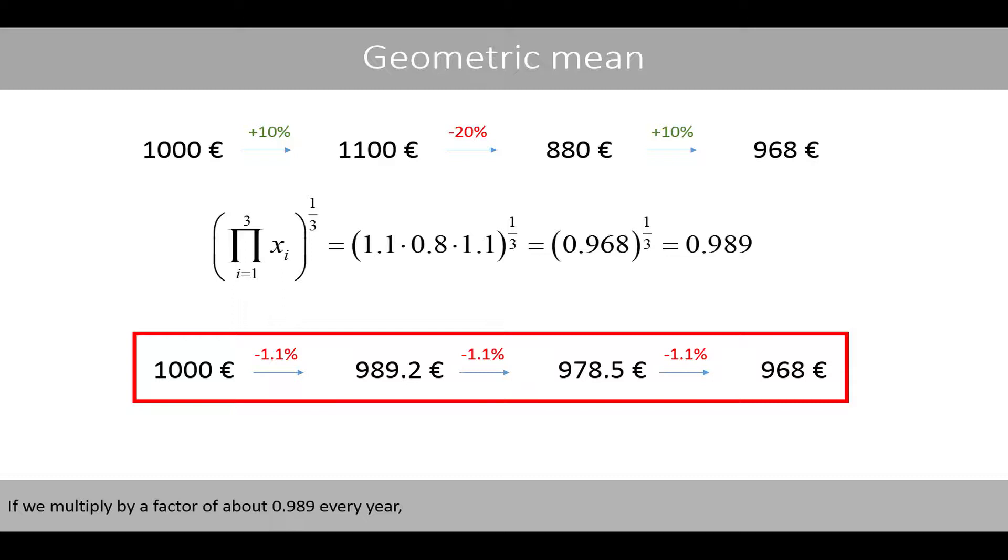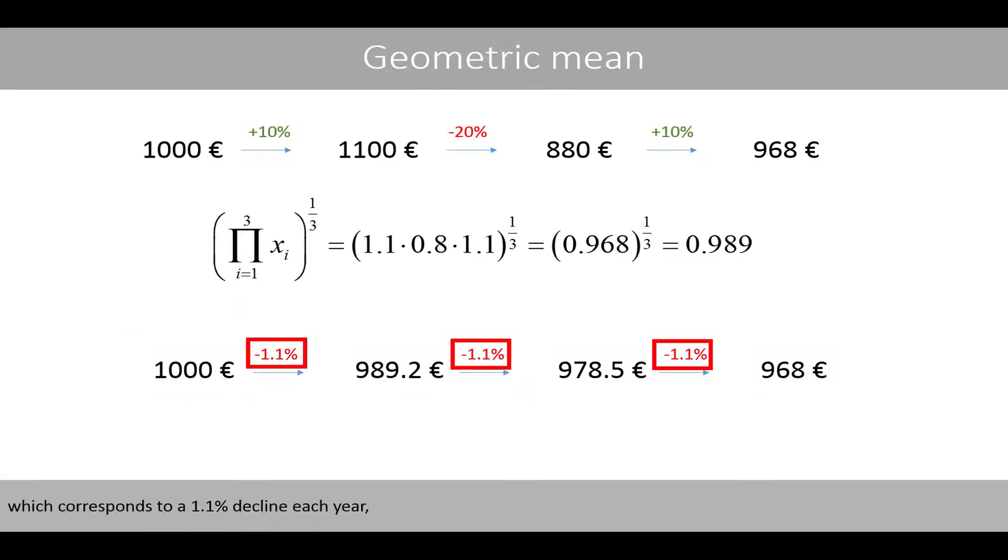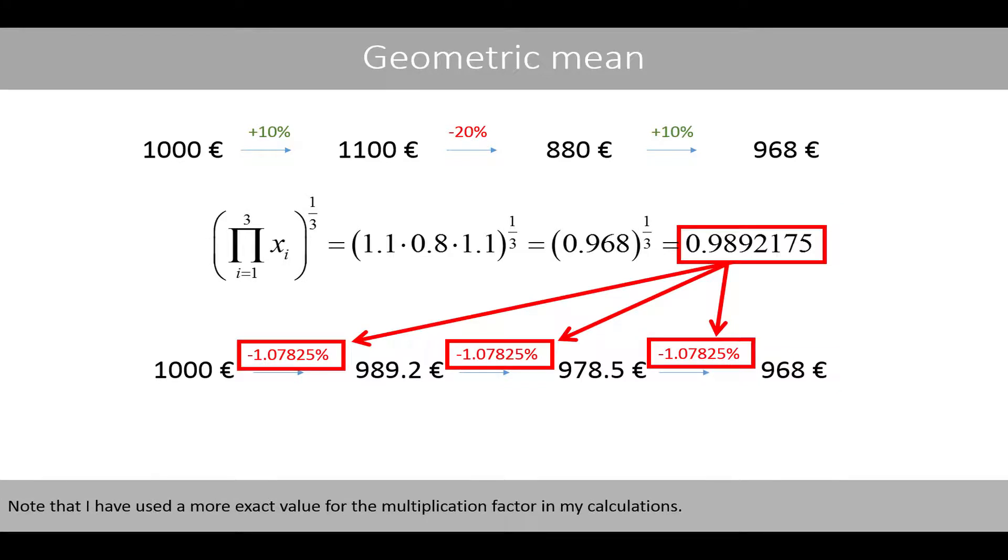If we multiply by a factor of about 0.989 every year, which corresponds to a 1.1% decline each year, we see that the 1,000 euros have been reduced to 968 over the three years. Note that I have used a more exact value for the multiplication factor in my calculations.